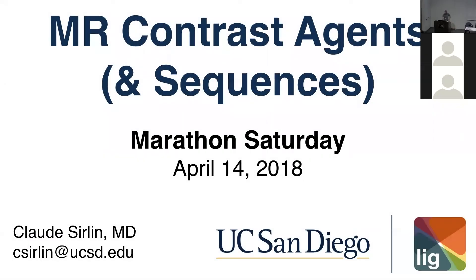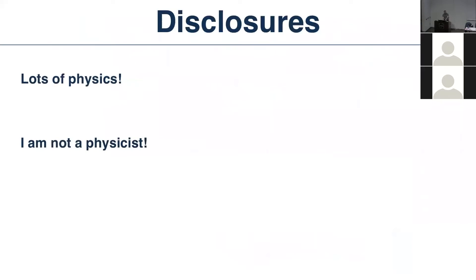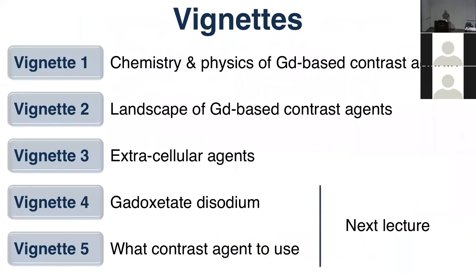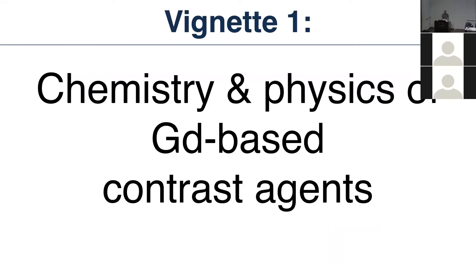Let's talk about MR contrast agents. There are five vignettes to discuss, but I'm only going to cover three of them in this lecture and the last two after lunch. I'll talk about the chemistry and physics of gadolinium-based contrast agents, the landscape of gadolinium-based contrast agents, and extracellular agents. There's a separate lecture on gadobenate dimeglumine and on what contrast agent to use.